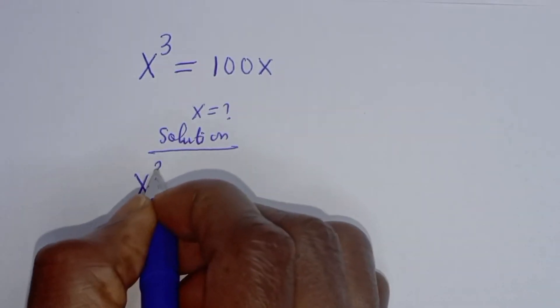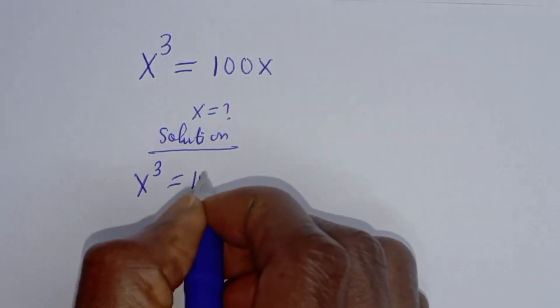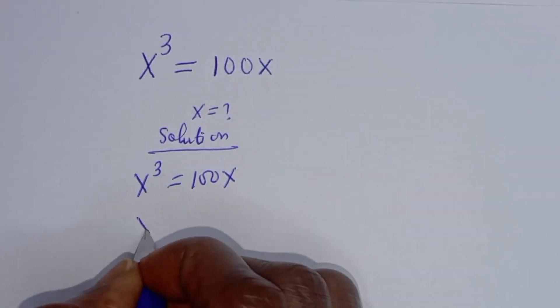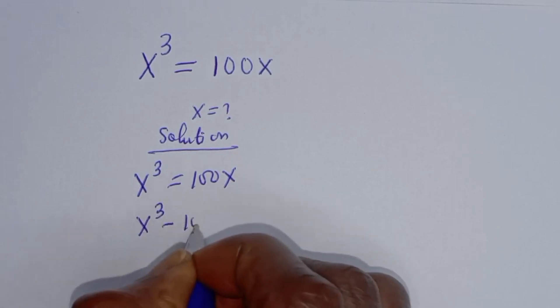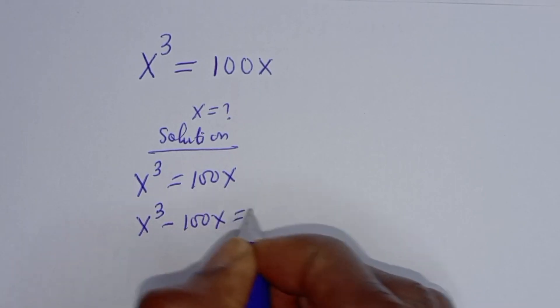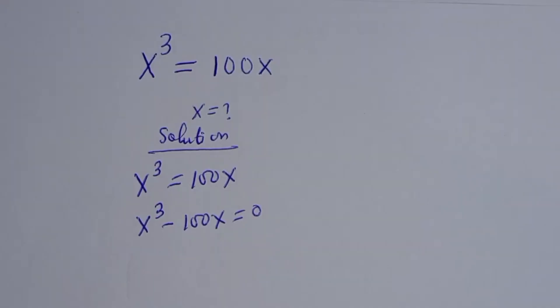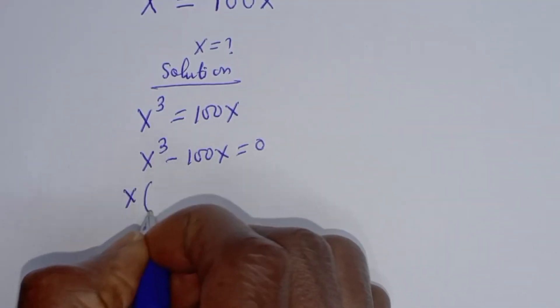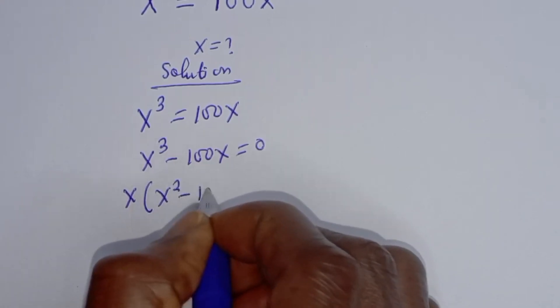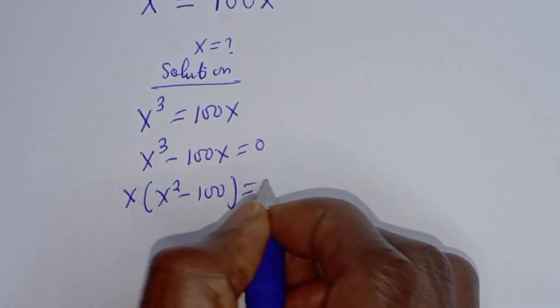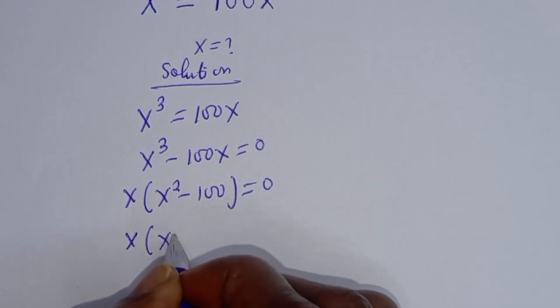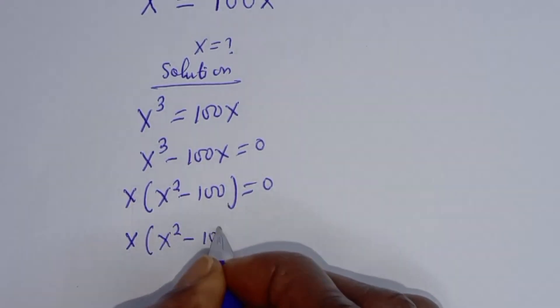Here is x raised to power 3 equals 100x. Let's take 100x to this side. We have x raised to power 3 minus 100x equals 0. Then x is common. Here is x bracket x squared minus 100 equals 0.